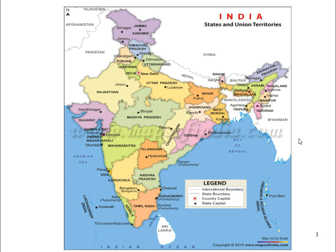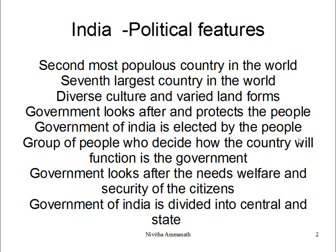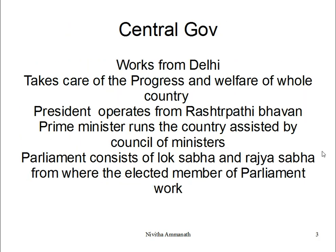India is the seventh largest country by area and second most populous country in the world. It has a diverse culture and varied landforms. The government looks after and protects the people. The government of India is elected by the people — a group of people who decide how the country will function. The government looks after the needs, welfare, and security of the citizens. The government of India is divided into state and central government. The central government works from Delhi and takes care of the progress and welfare of the whole country.